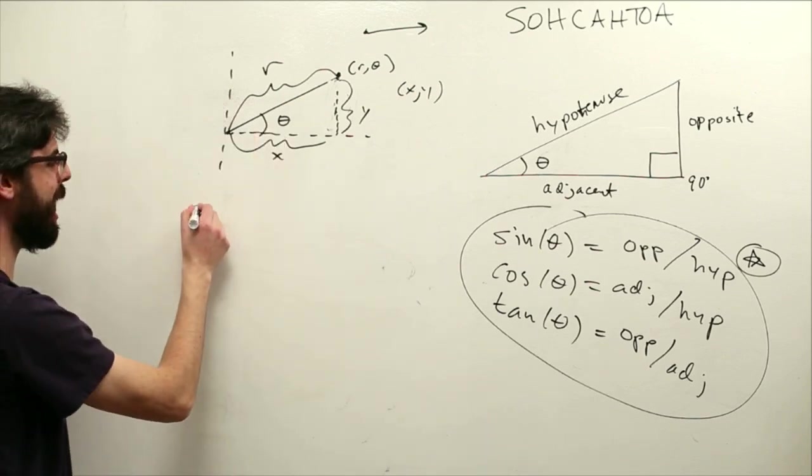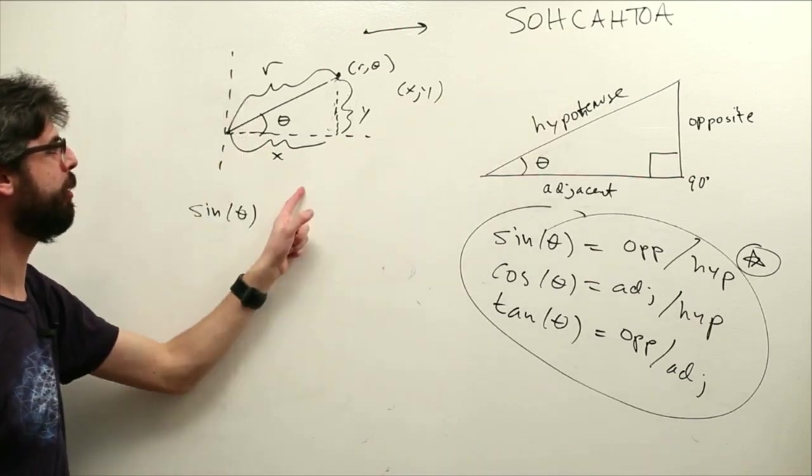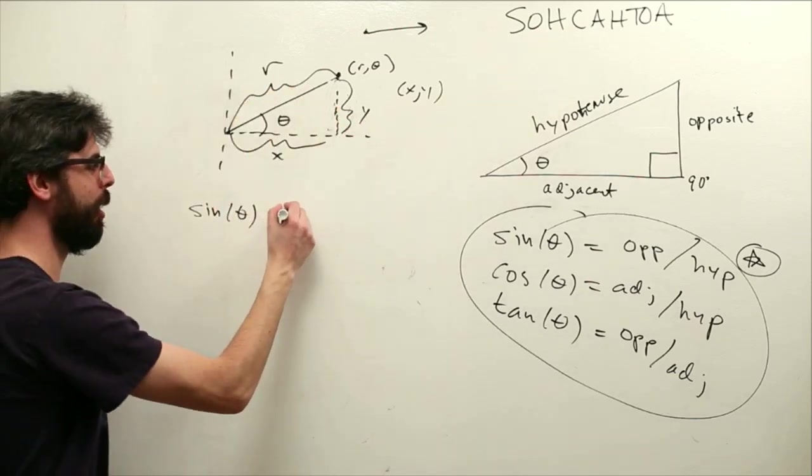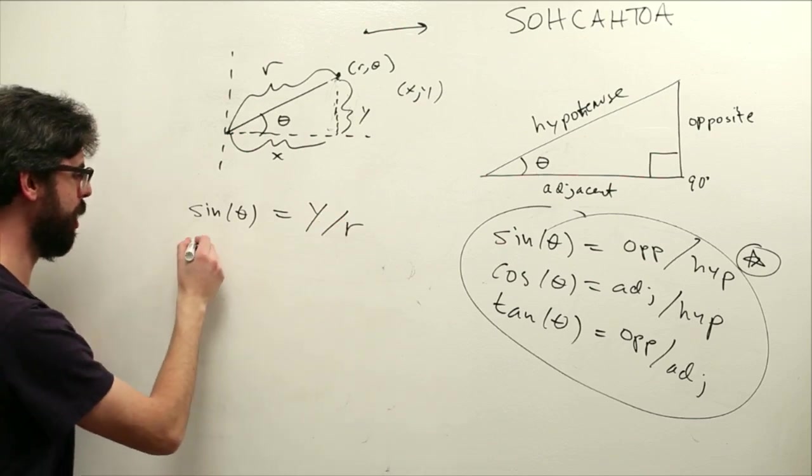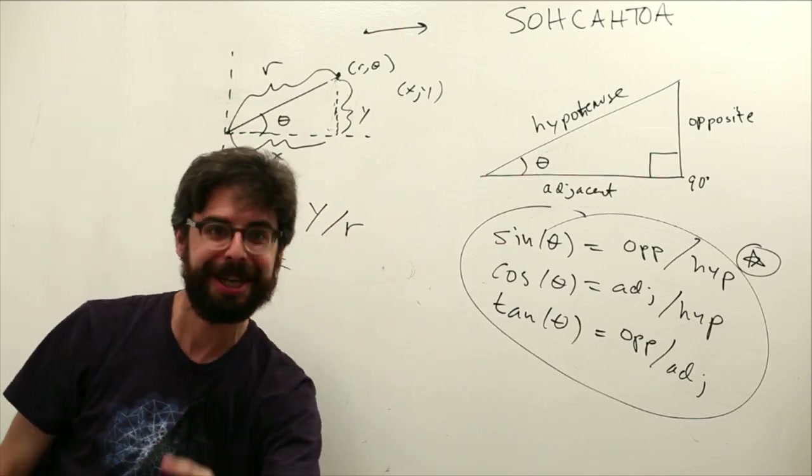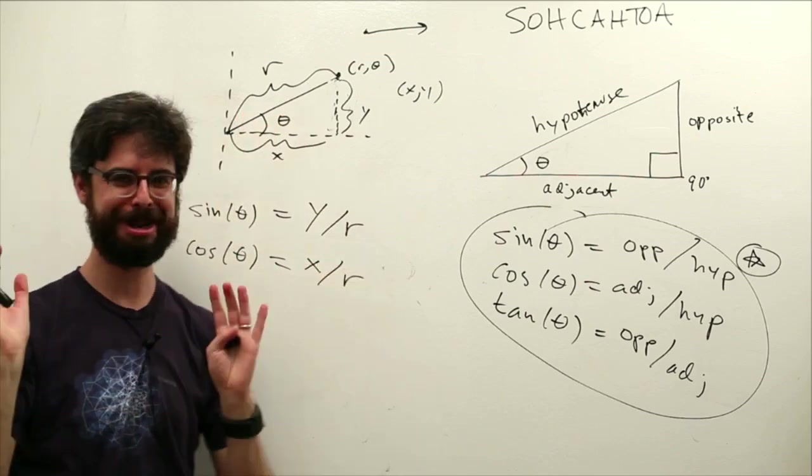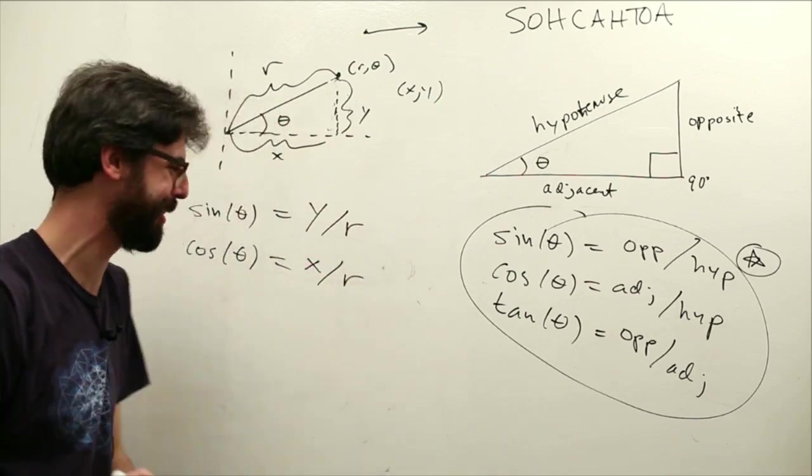Well, what is sine of theta in this instant? Sine of theta is opposite over hypotenuse. Opposite is y, hypotenuse is r. y divided by r. Cosine of theta is adjacent, which is x, divided by r. x divided by r. Okay, now we're really, this is super exciting. Okay, what's happening here?